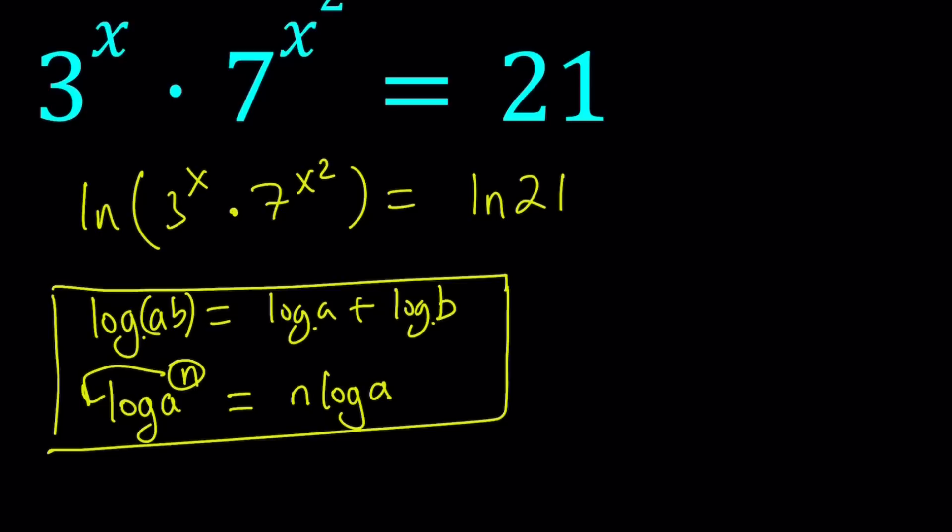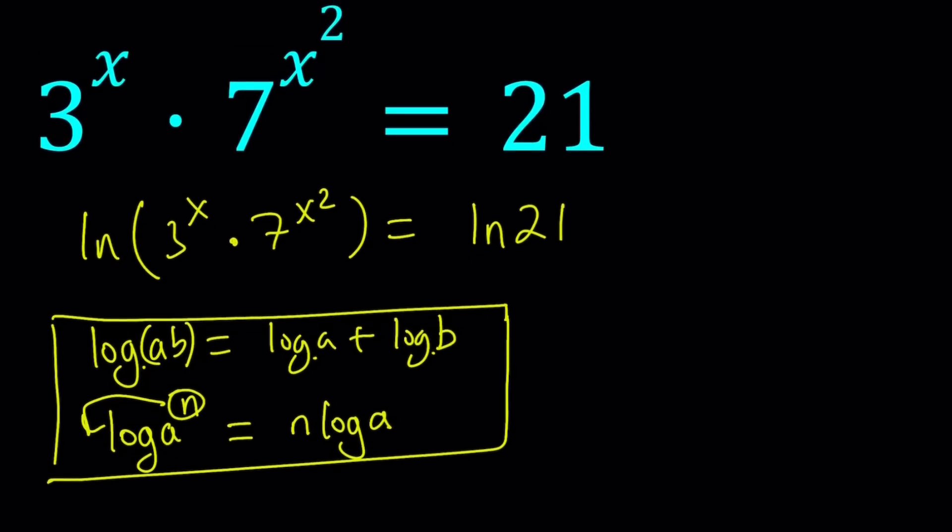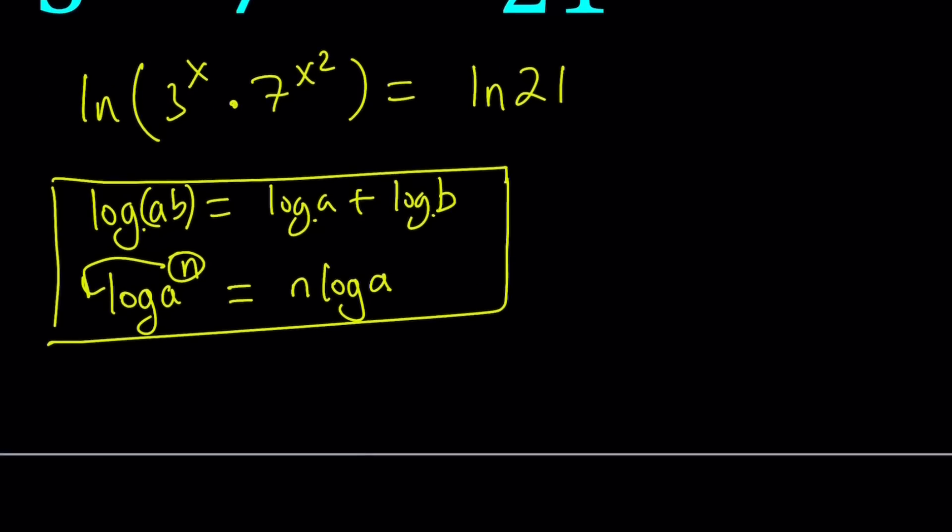This is not a logarithmic equation, but we're using logarithms to solve it. Specifically, the natural log. Okay, so let's go ahead and take this and separate them into a sum first. So I'll write it as ln 3 to the X plus ln 7 to the X squared equals ln 21. ln is the natural log, short for log natural. So ln 21 is a number. You don't have to worry about the exact value because ln 21 is the exact value.